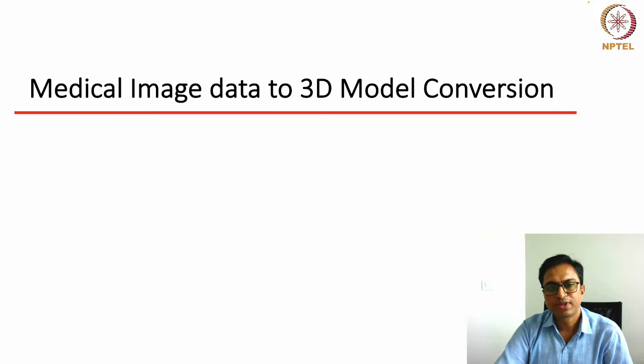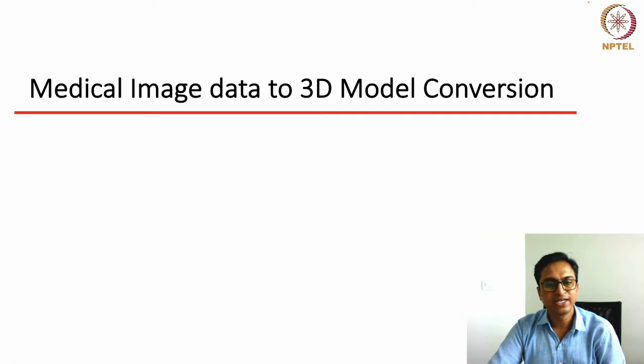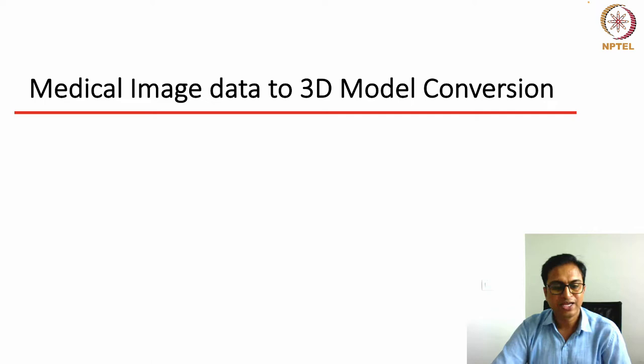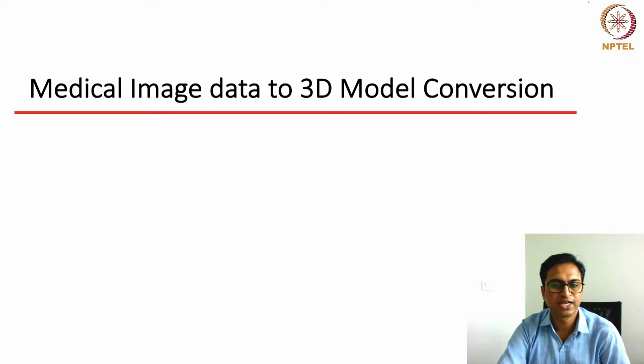When we actually print a particular tissue, organ structure, or any structure, we need an STL file. That STL file should be generated in different ways. In this lecture we will discuss how the STL file can be generated and used for bioprinting. We have seen how bioprinting can be done — if you have an STL file, we can generate different types of bioprinting output. We can load our STL file and the bioprinter will print as per our design.